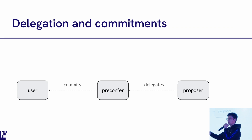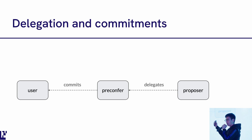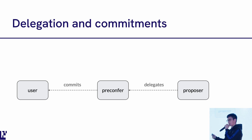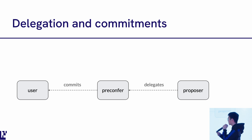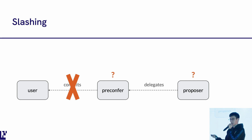On the highest level, what is happening is: a proposer is delegating — 'I'm going to give my ability to say what is included in my block to this person.' The pre-confer will go out to the market — users, L2s, searchers, anyone — and say, 'I now control the ability to offer pre-conf for this specific proposer,' and make commitments on that behalf. The problem is: what happens when a commitment is broken? When a pre-confer makes a commitment to an end user and it's not fulfilled, do you slash the pre-confer or do you slash the proposer?